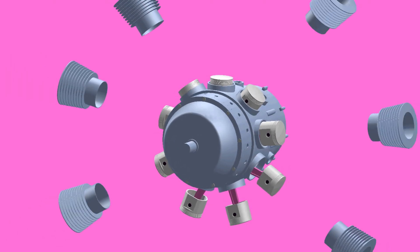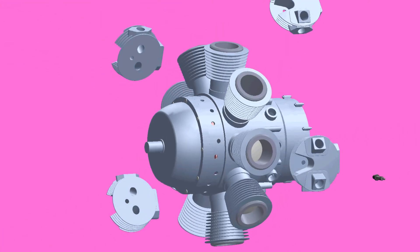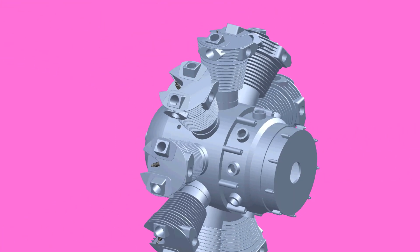The cylinders are mounted radially around the crankshaft, and the axis of the cylinders are coplanar.